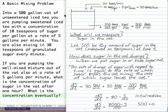Let's take a basic mixing problem from setup to solution to answer and graphing. Let's say that you have a 500 gallon vat of unsweetened iced tea and you're pumping into it sweetened iced tea with a concentration of 10 teaspoons of sugar per gallon at a rate of 5 gallons per minute.